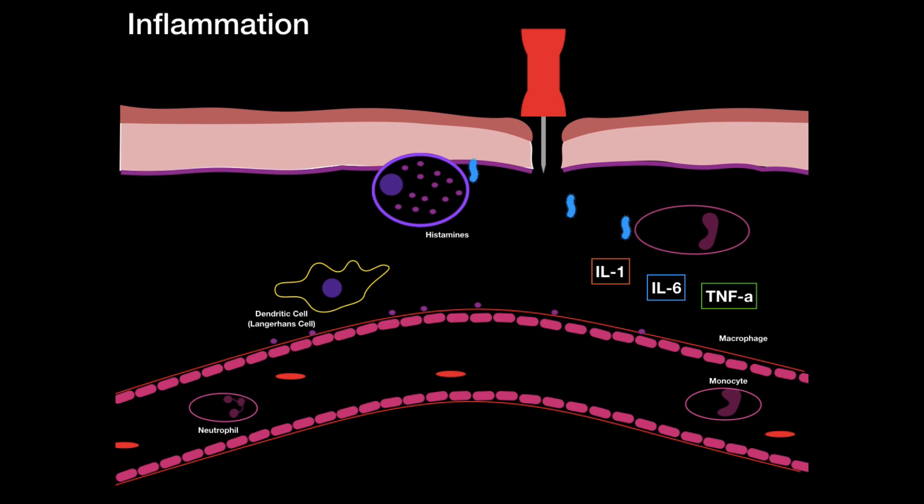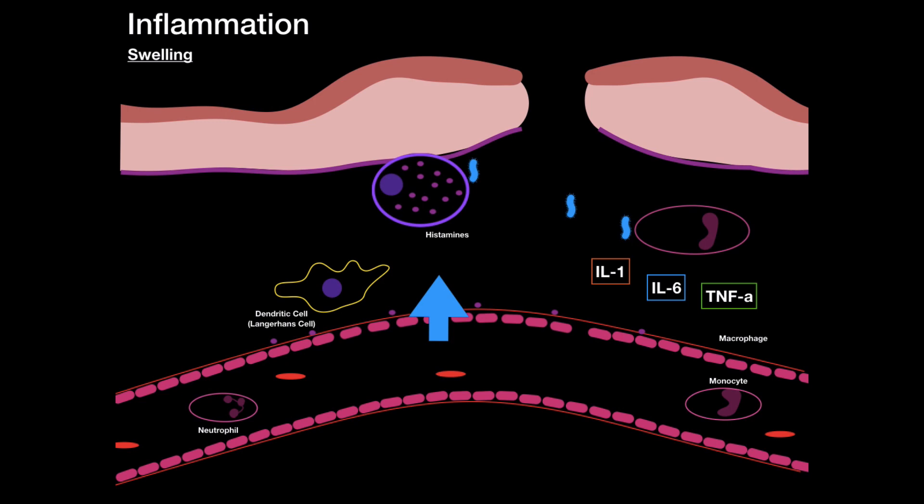Histamines are what we call vasodilators because they dilate the blood vessels. But it also increases the permeability of local blood vessels for other cells to come in and help. This, though, causes water to flow in, causing swelling. Swelling is one of the four characteristics of inflammation. Also, keep in mind the complement system can activate releasing their chemokines like chemotaxis and anaphylatoxins, causing more leakage through the blood vessels.